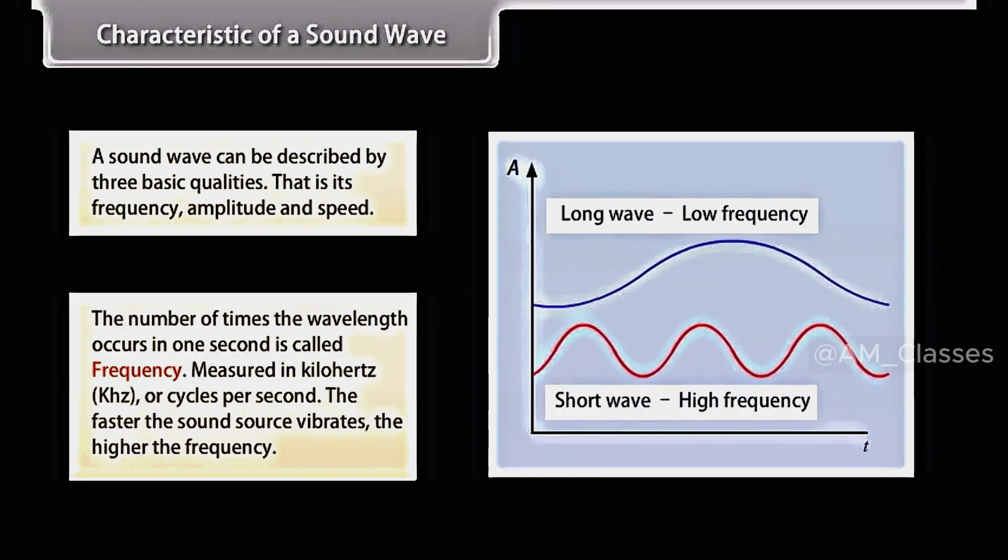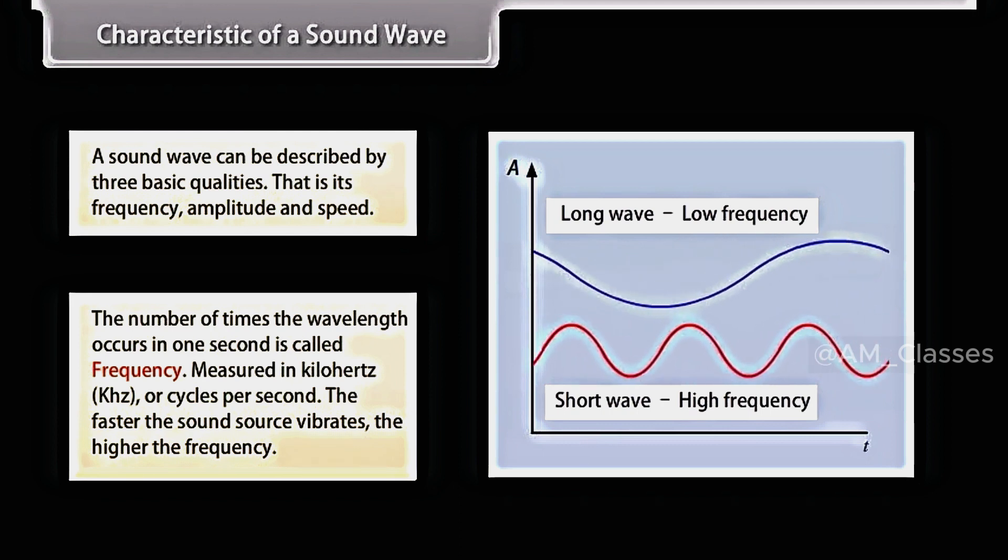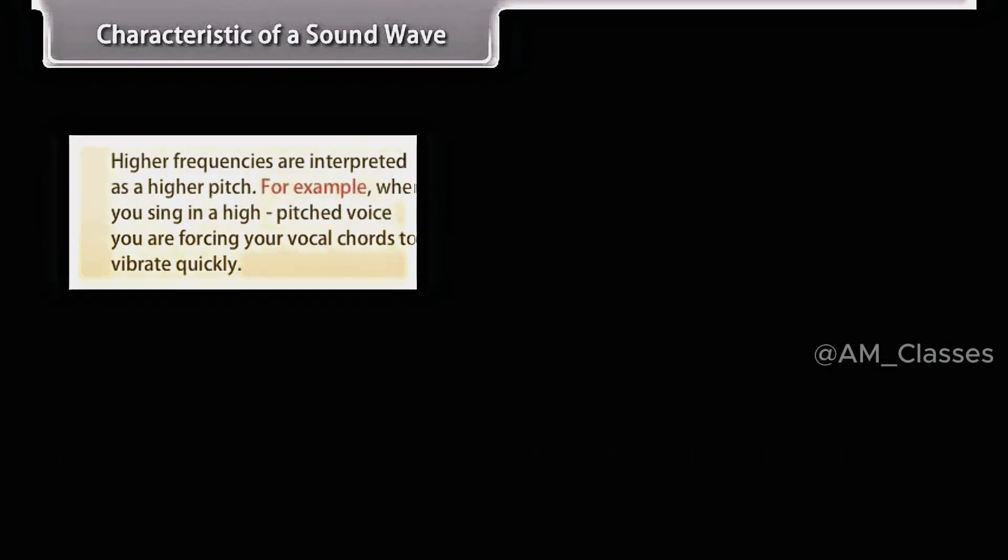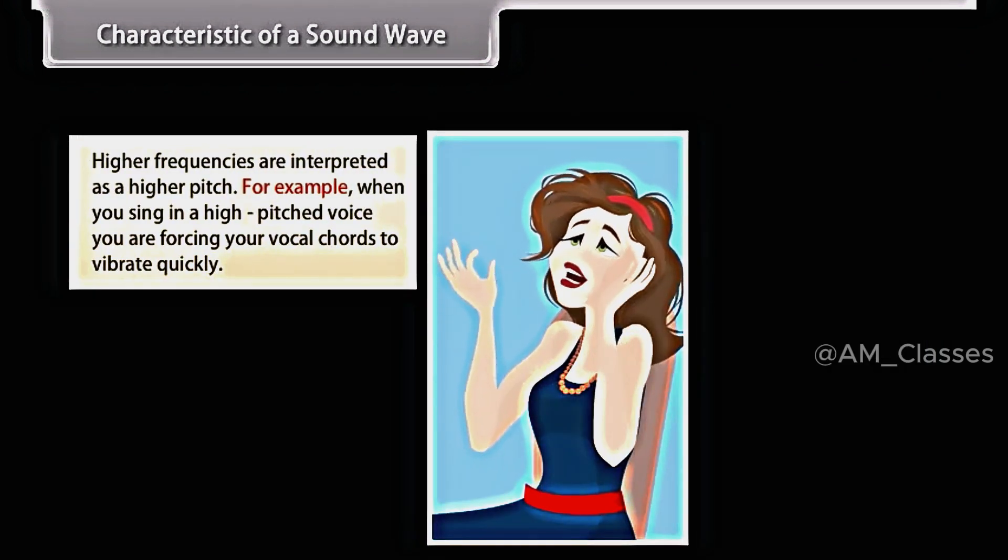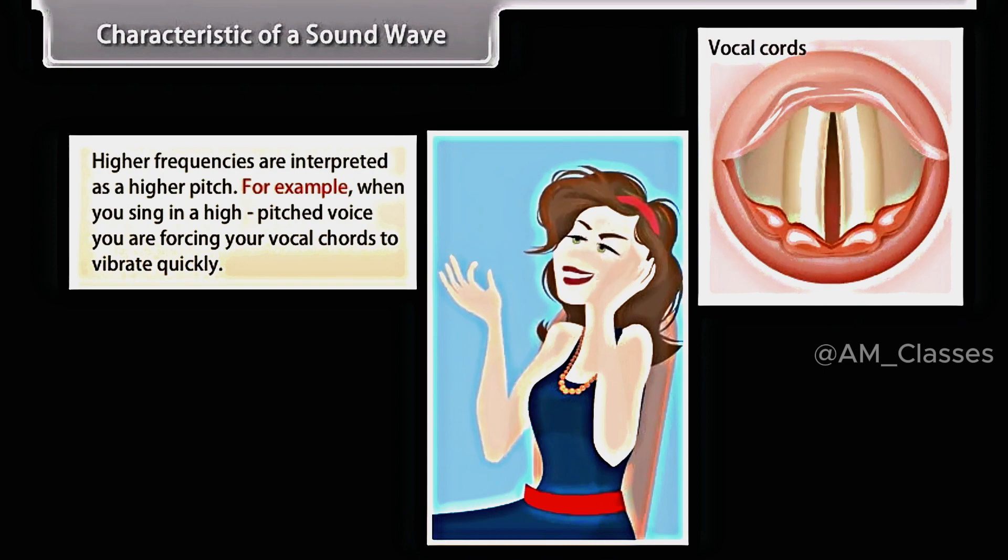The number of times the wavelength occurs in one second is called frequency. It is measured in kilohertz or cycles per second. The faster the sound source vibrates, the higher the frequency. Higher frequencies are interpreted as a higher pitch. For example, when you sing in a high-pitched voice, you are forcing your vocal cords to vibrate quickly.